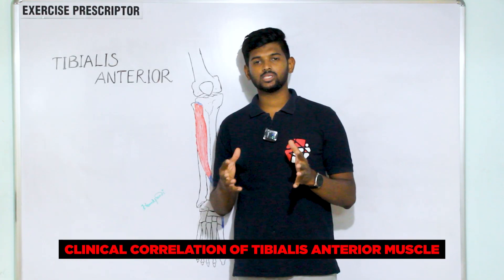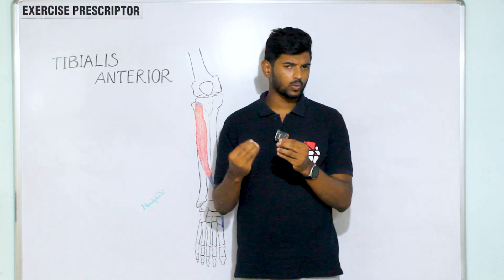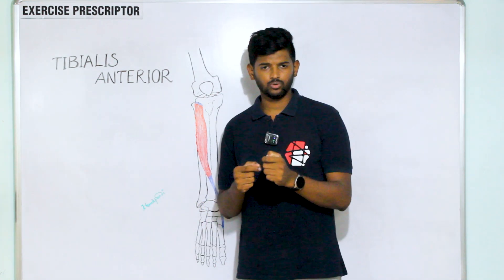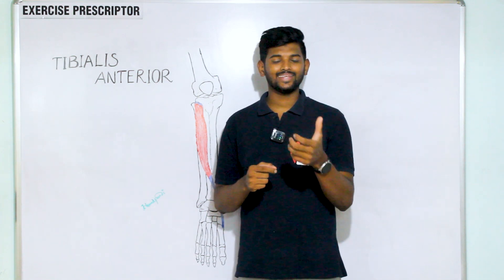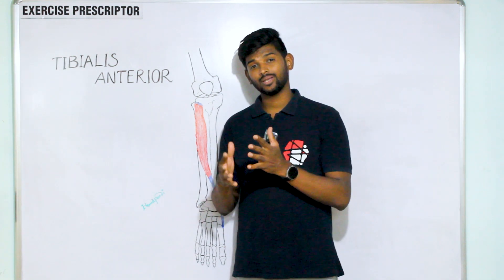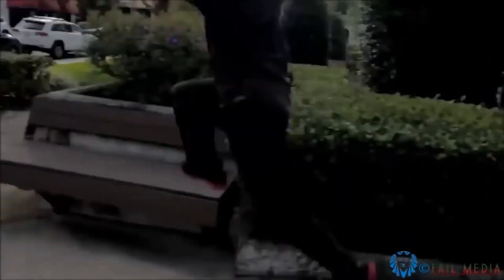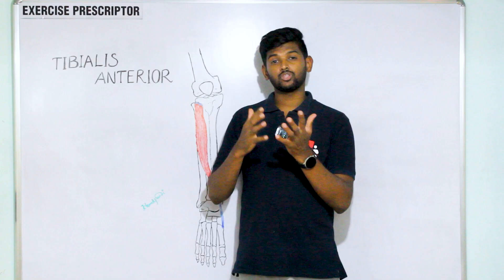Clinical correlation of the tibialis anterior: if this muscle is overloaded or overworked, tight or painful, the situation is called anterior shin splint. This is most common with sudden increasing physical activity, over running, power running and jumping activities without proper load monitoring. This is the main reason for anterior shin splint.